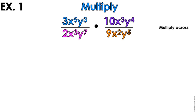When we're multiplying monomials, we're just going to multiply across. Blue times purple, and then pink times orange. So 3 times 10 is 30, x⁵, x³, x⁸, y³, y⁴, y⁷.